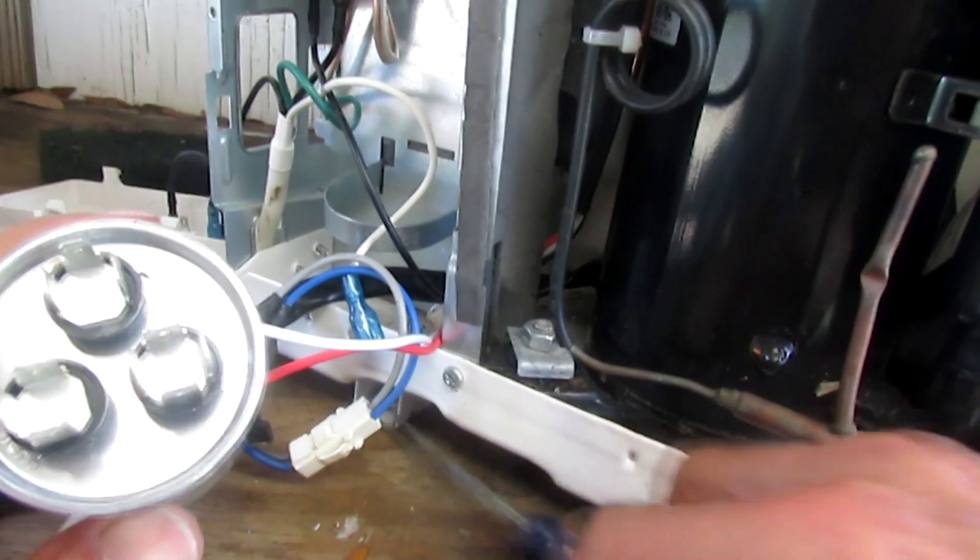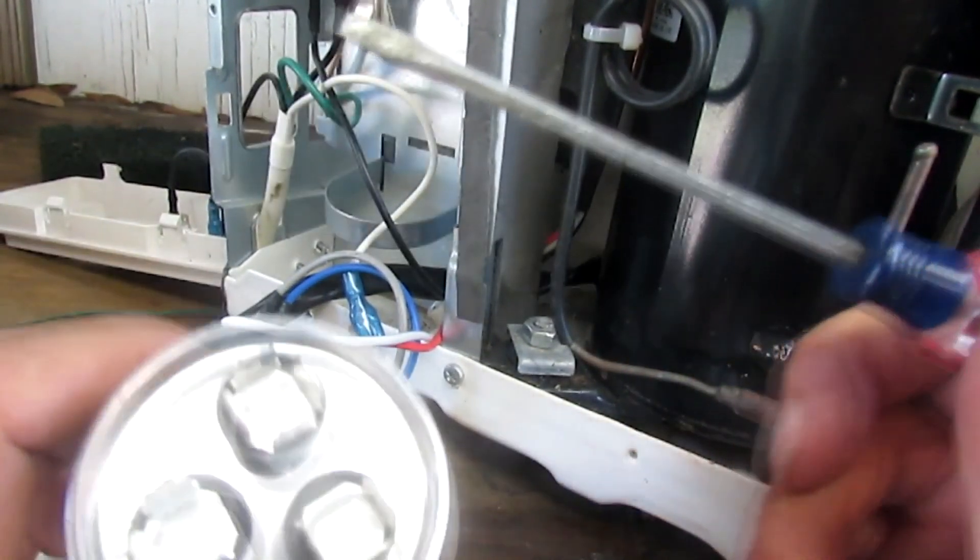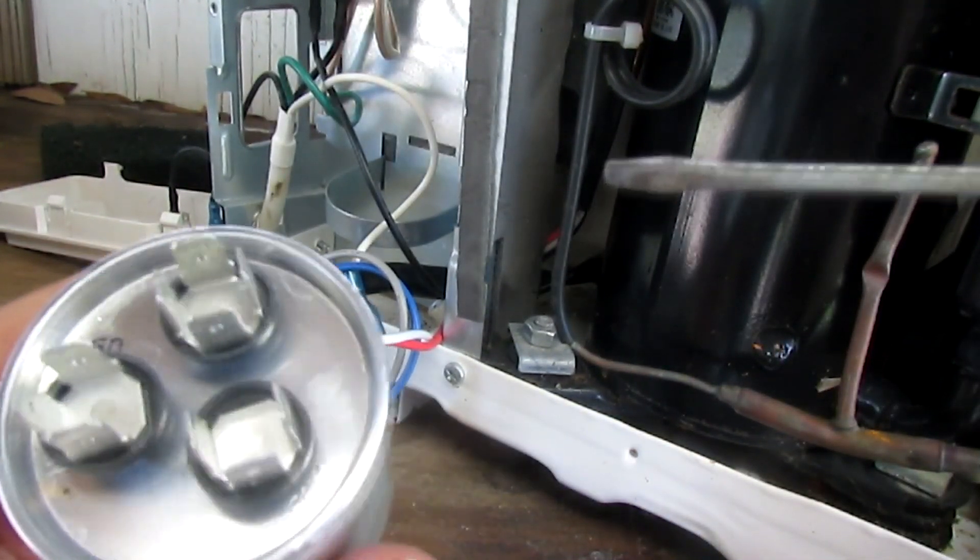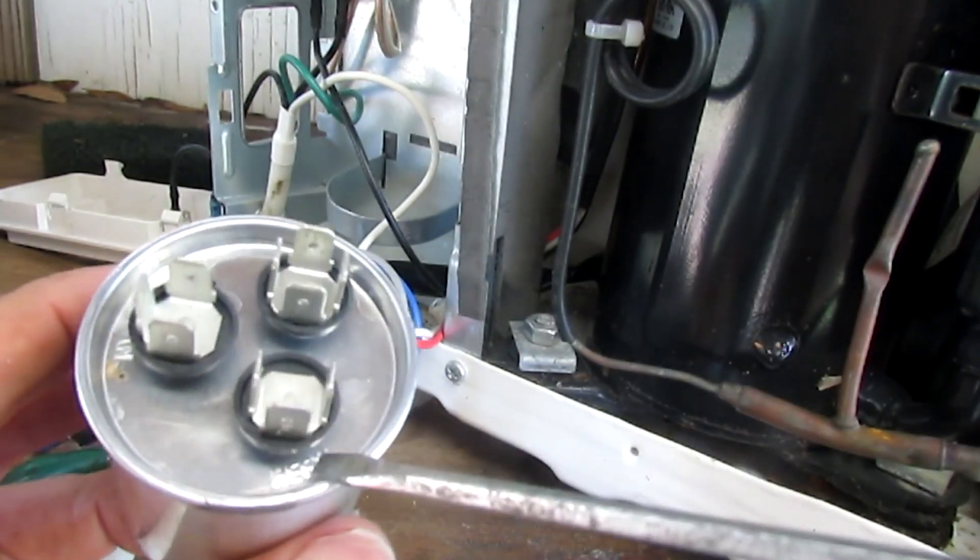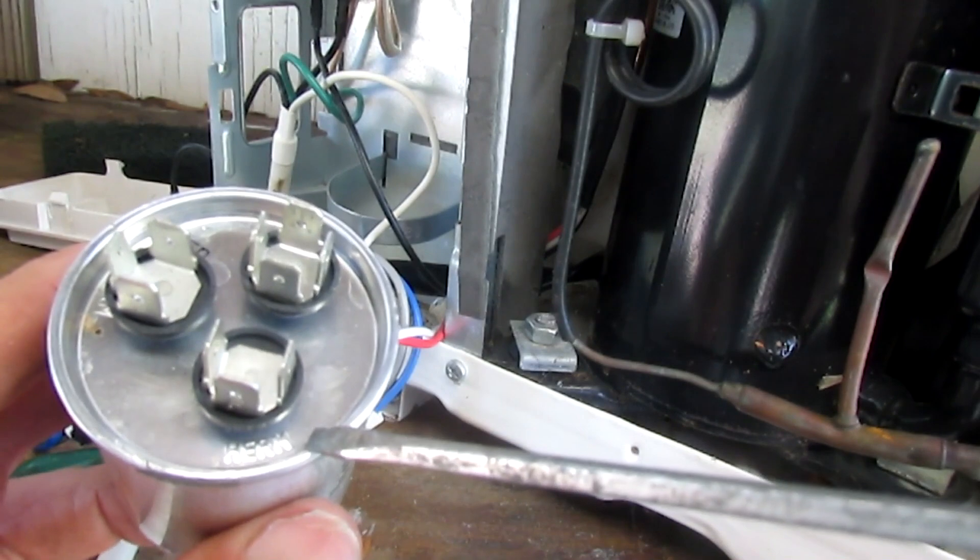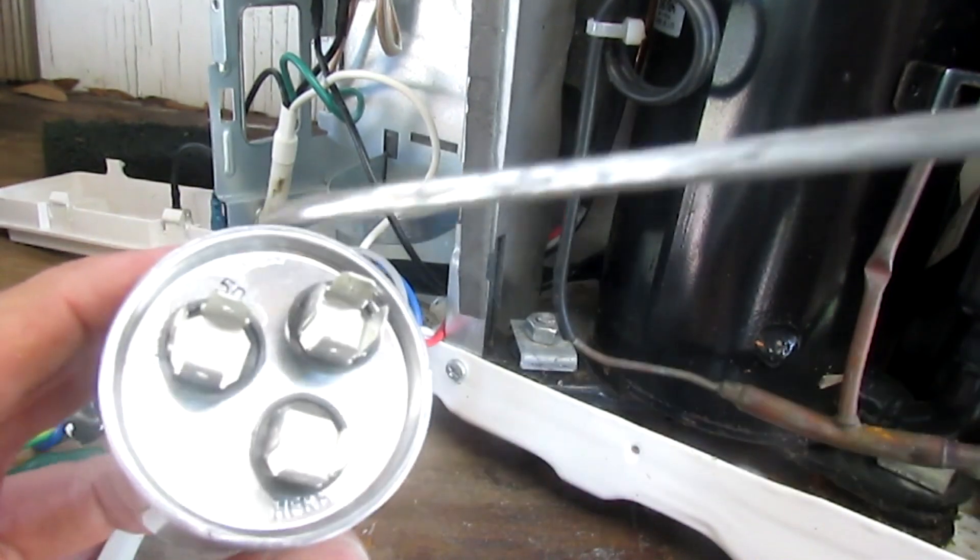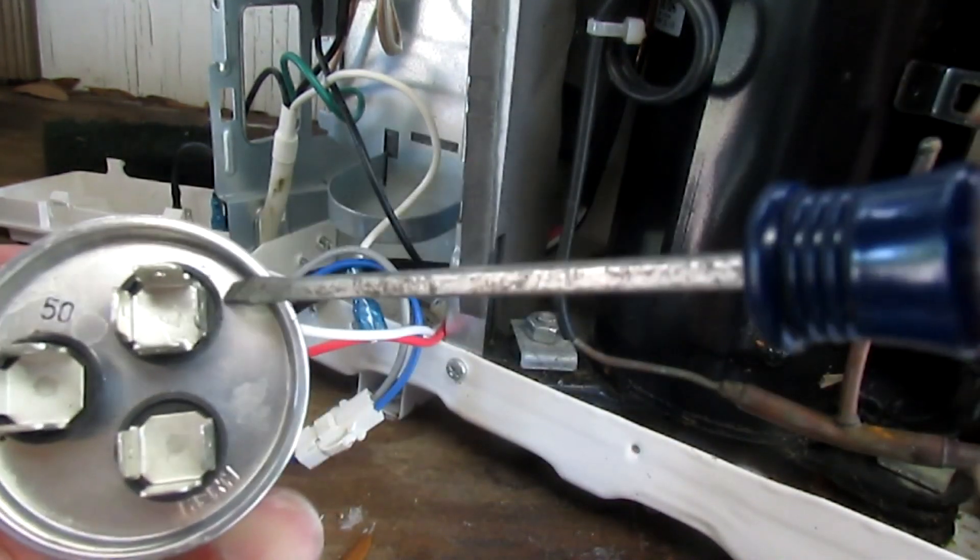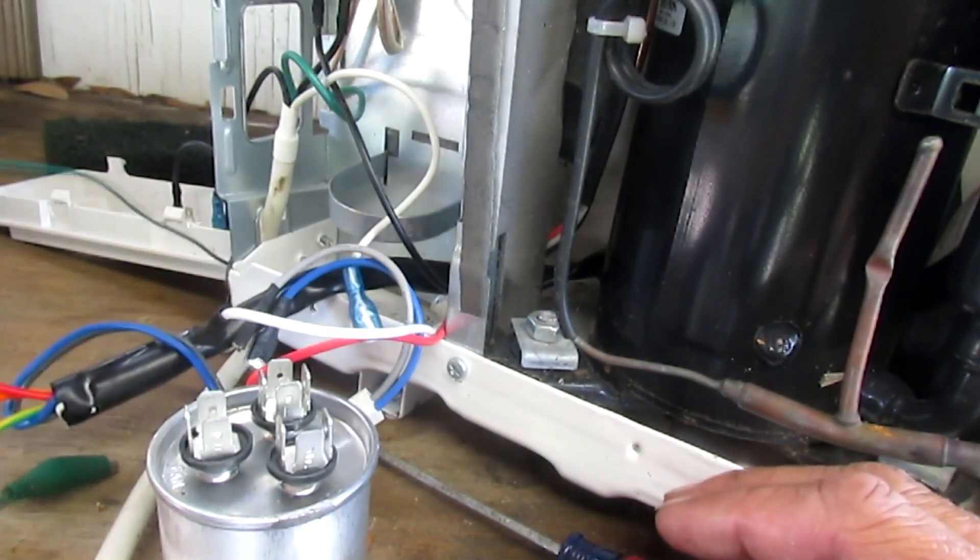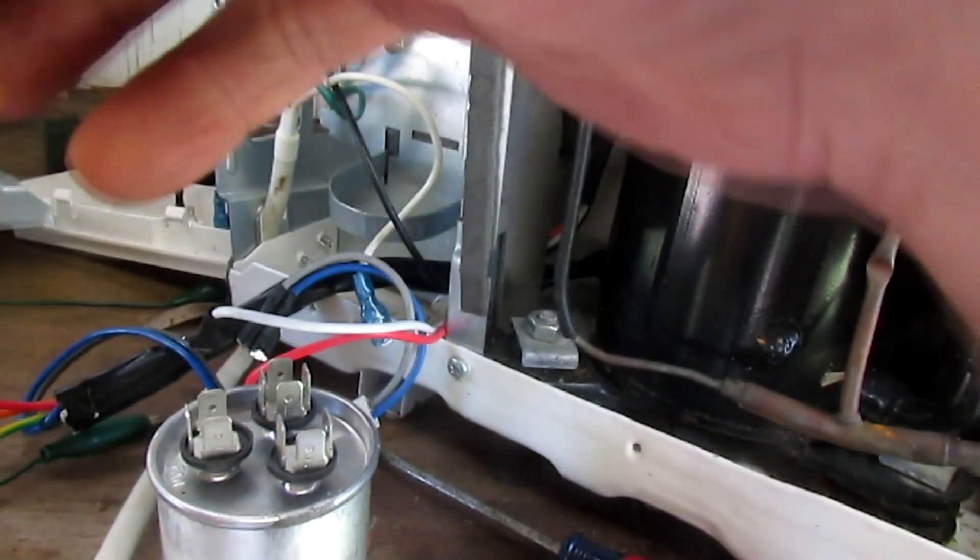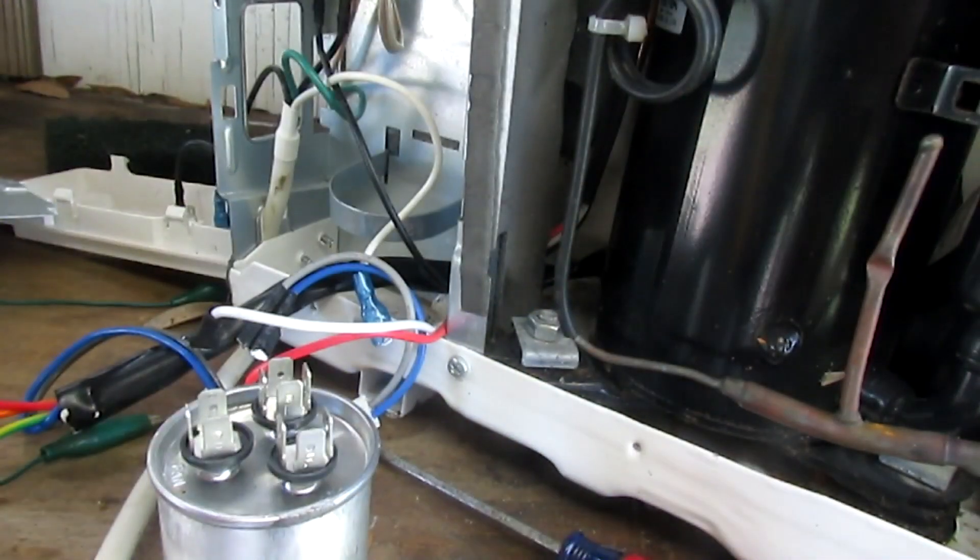Now I'm looking at this, and you can see on these dual capacitors they're labeled. One contact here says Herm. On the other contact, it says fan, and then here you see I have a little C for common. Now make sure you get them all shorted out so you don't get shocked.